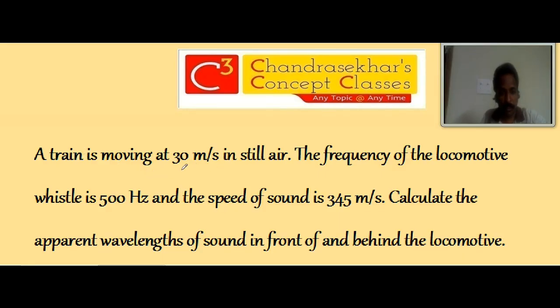A train is moving at 30 meters per second in still air. The frequency of the locomotive whistle is 500 Hz and the speed of sound is 345 meters per second. Calculate the apparent wavelengths of sound in front of and behind the locomotive. So behind and in front, what are the apparent wavelengths?